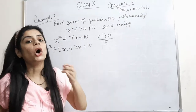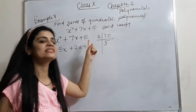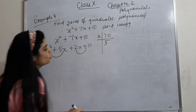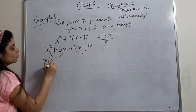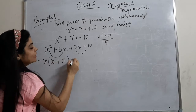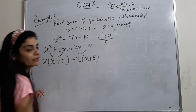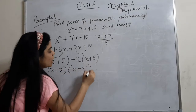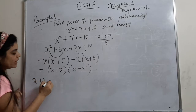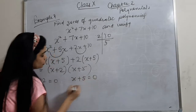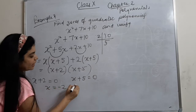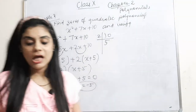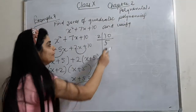We split the middle term and take out common factors. This is the factoring method we learned in class 9 — we remove the constant term by splitting and then take common factors to get the zeros.